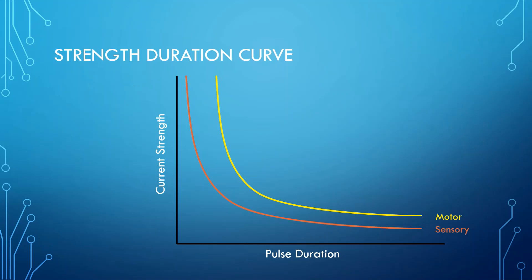On this slide, you'll see a very simplified representation of the strength-duration curves for sensory nerves and for motor nerves. On the vertical axis, you'll see current strength, and that's the amount of electrical current going through the tissues in milliamps. On the horizontal axis, you'll see pulse duration, and that's how long each electrical pulse lasts, typically expressed in microseconds to milliseconds.